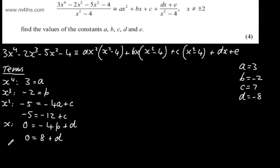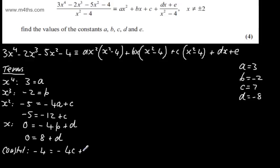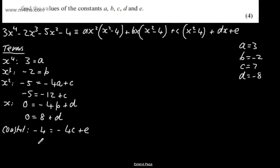Then looking at the constant term: on the left that's going to be minus 4, and on the right we're going to have minus 4c plus e. We've already found that c equals 7, so we can say minus 4 equals minus 28 plus e, which gives us e equals 24.